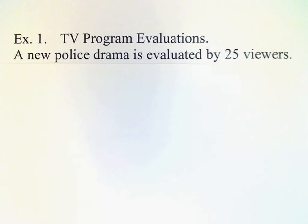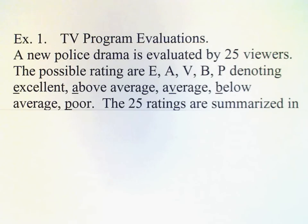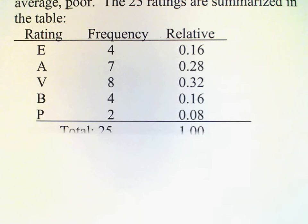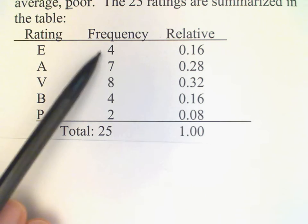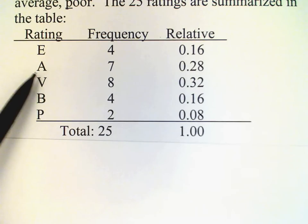Let's look at an example. We have a new TV program that is going to be evaluated by 25 viewers. There are five possible ratings that the viewers can give: E, A, V, B, and P, which stand for excellent, above average, average, below average, and poor. The ratings for this program are given in this table. You can see next to each rating a number — the frequency — that's the number of people that responded with that rating.